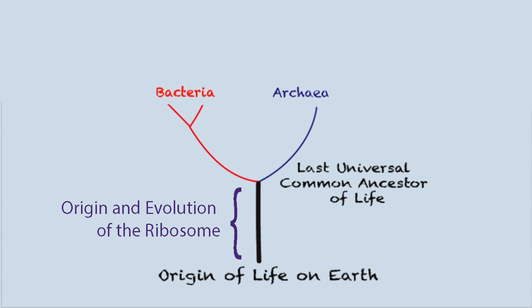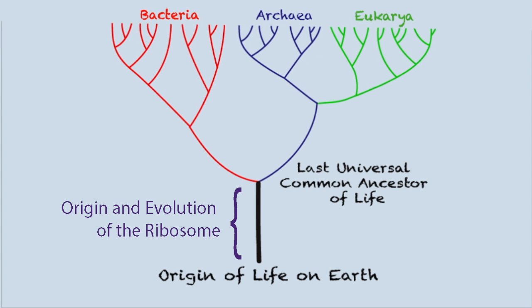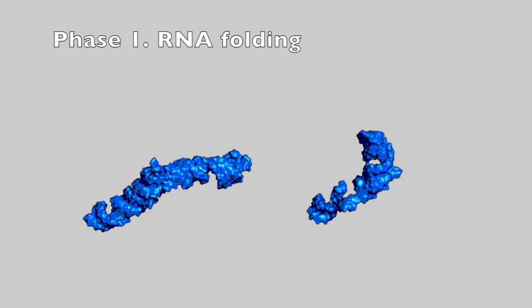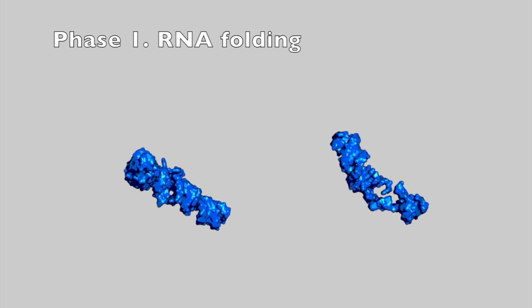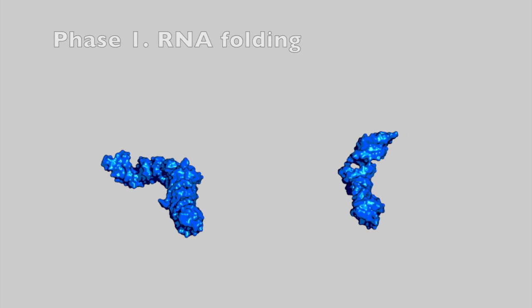Even though it is extremely ancient, we have developed methods for reconstructing the evolution of the ribosome. In phase 1, the LSU and SSU both begin as small RNA stem loops.